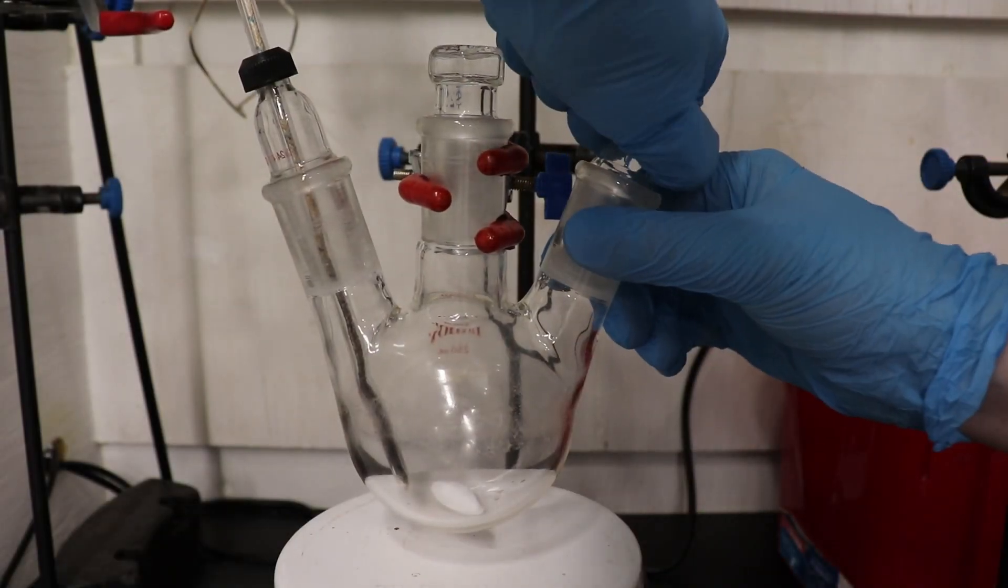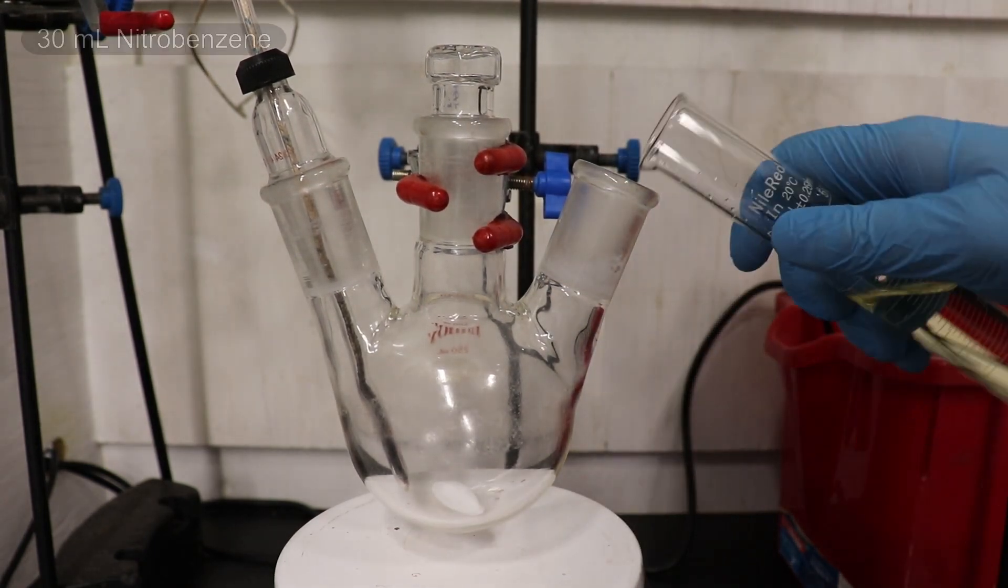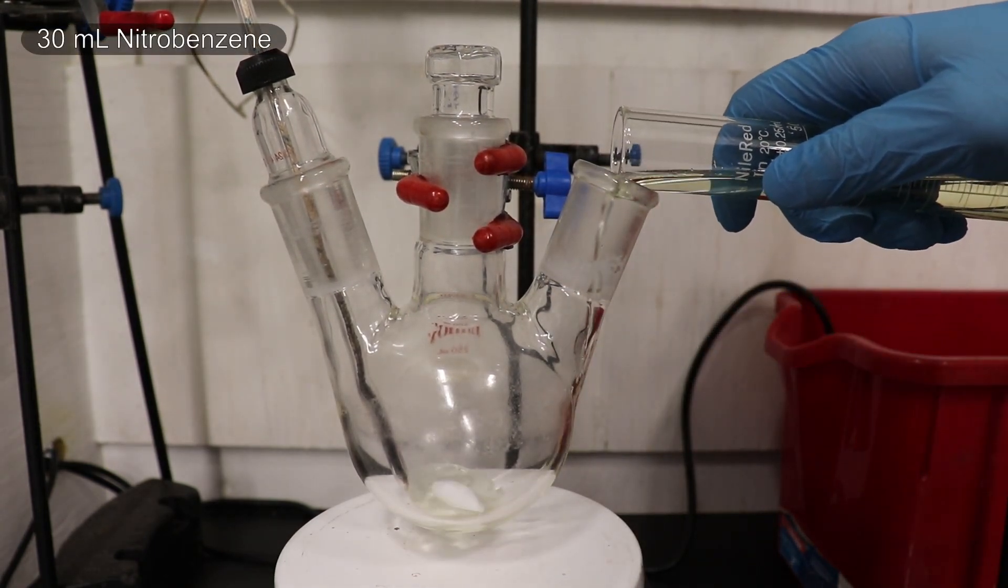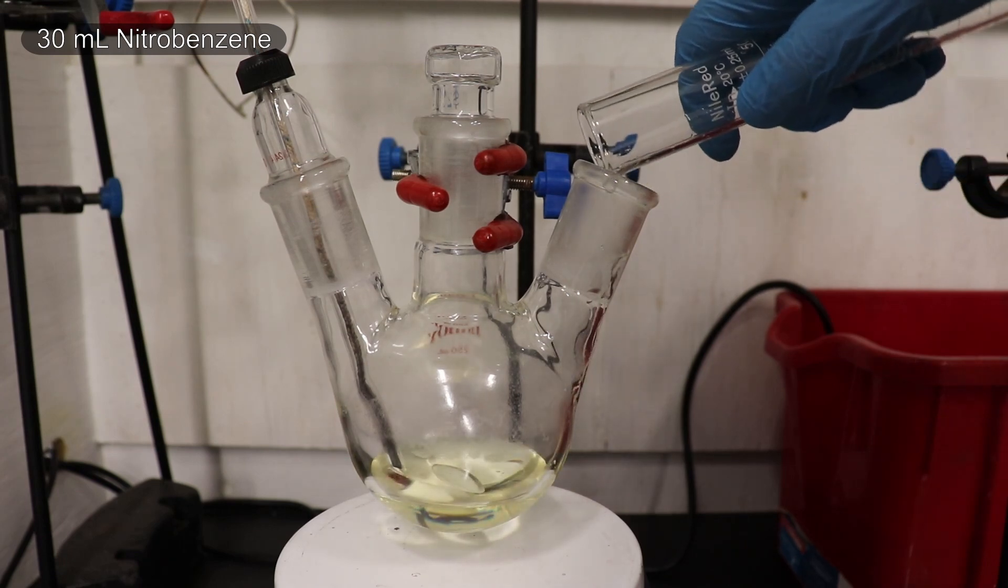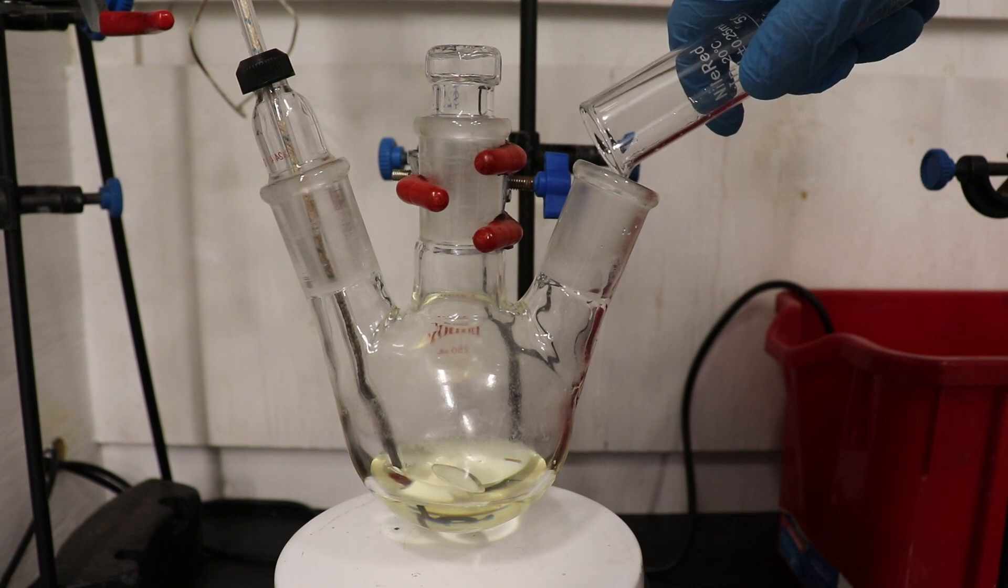For the synthesis, I'm going to be following the procedure as laid out in SIDNAG's Pharmaceutical Manufacturing Encyclopedia. To begin, 30 ml of nitrobenzene is added to a 250 ml three-necked round-bottom flask.